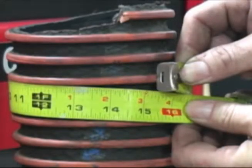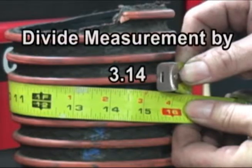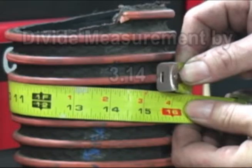If a pie tape is not available, a conventional tape measure can be used. The fractional measurement must be converted to a decimal. This measurement can be divided by 3.14 to determine the outside diameter of the hose.